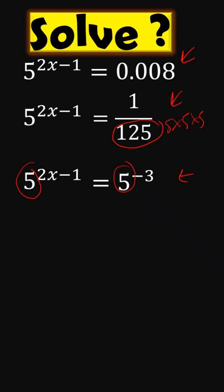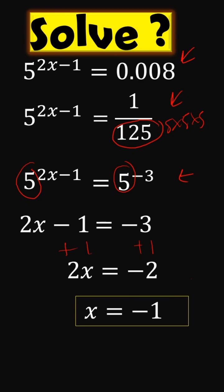you can go ahead and equate the powers. So 2x minus 1 will be equal to minus 3. If you now add 1 at this stage, you're going to get 2x is equal to minus 2. Dividing by 2, x is minus 1.